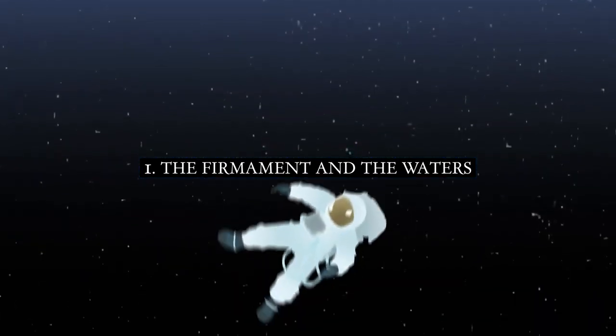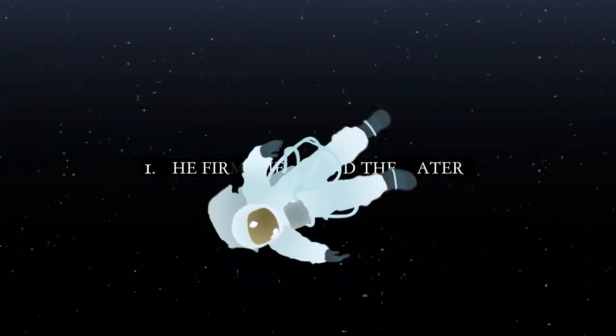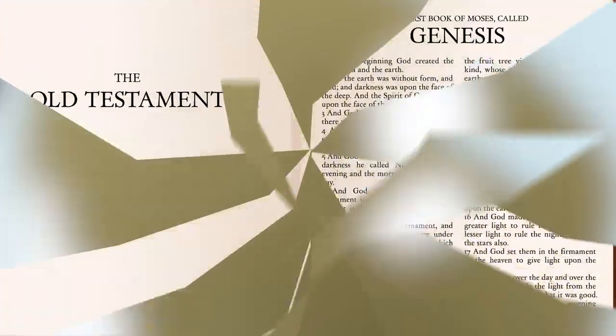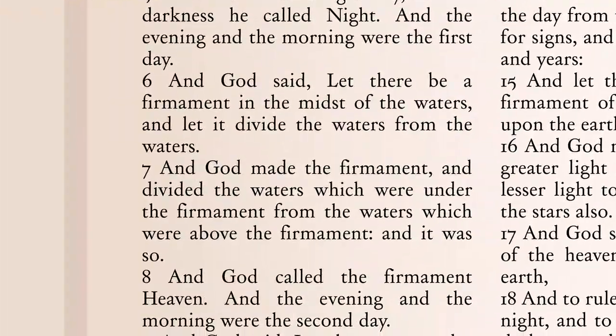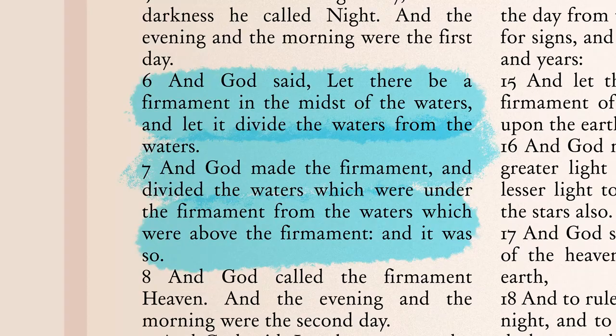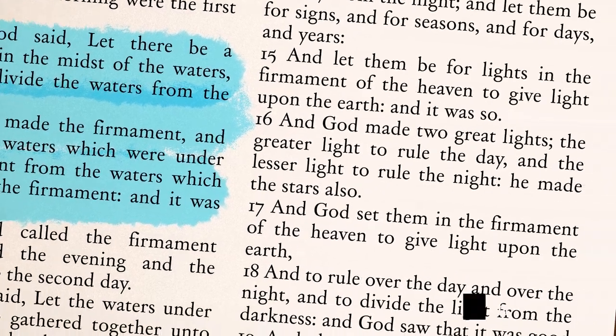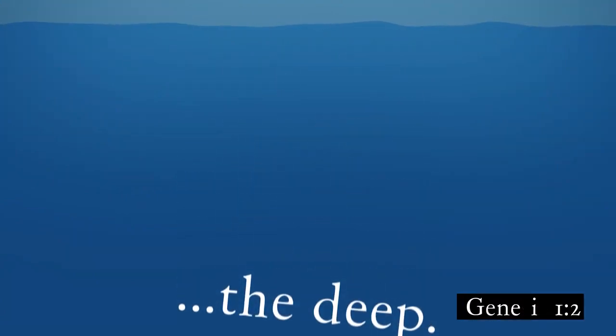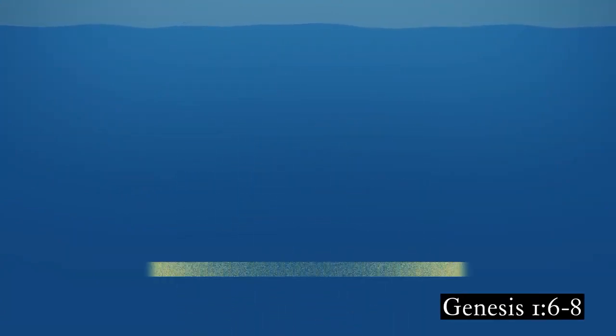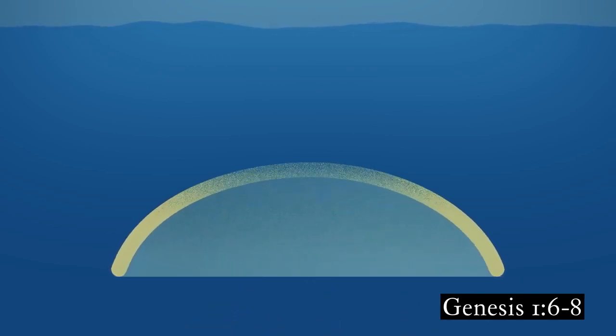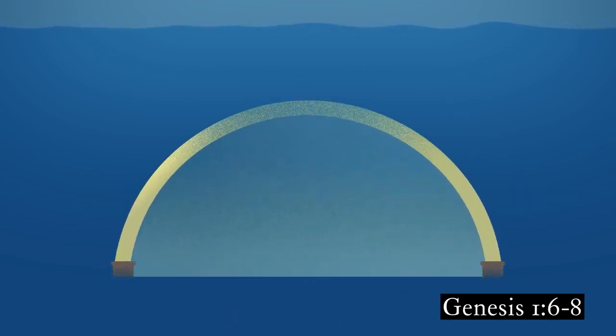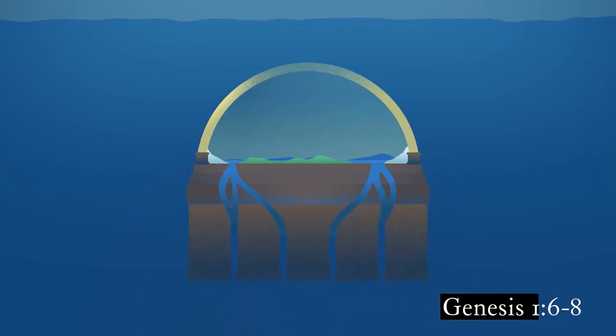Number one: The firmament and the waters. There is no outer space in the biblical model. The first chapter of Genesis and other scriptures describe our world as being encased within an immeasurable body of waters. These vast waters are referred to as the deep. On the second day of creation, God made the firmament to divide the waters which were below from the waters which were above, allowing for an inhabitable expanse in between.